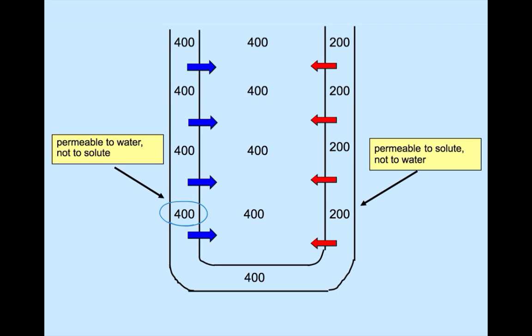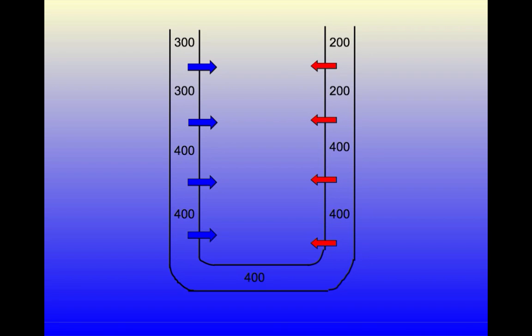Remember that at the same time as solute transport is taking place, fluid is actually flowing in the loop. So the more concentrated descending limb fluid rounds the hairpin turn and enters the ascending limb, while new fluid at 300 milliosmolar enters the descending limb from the top.